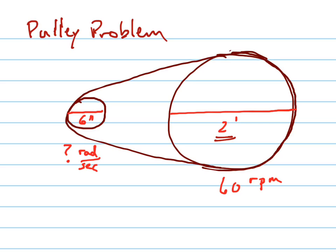So the first thing you should do is probably convert two feet to inches. So let's call it just 24 inches so we don't get confused later with that. It says that the angular speed of the bigger pulley is 60 revolutions per minute. And the question is, what's the angular speed in radians per second of the smaller pulley?